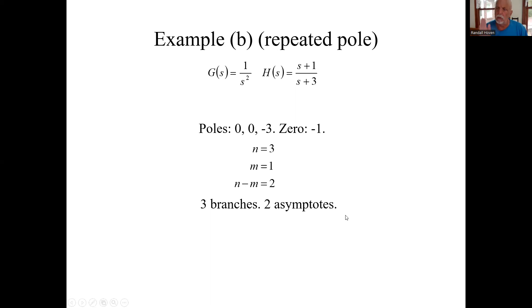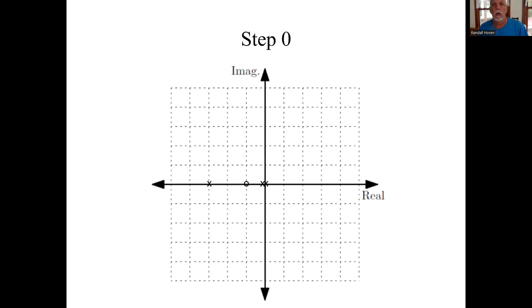Go back to the formula sheet. We have two. It's straight up and straight down. One vertical line. Here with step zero where you just plot poles and zeros. Here's a double pole at the origin. Another one at minus three and a zero at minus one. So that's step zero.